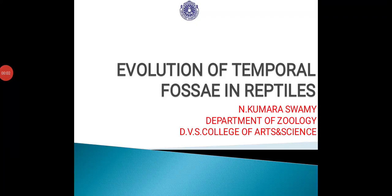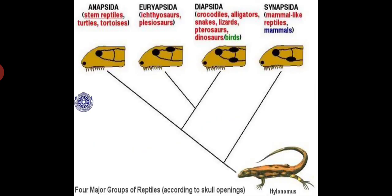Good morning students. Today let me explain a concept called the evolution of temporal fossa in reptiles. Temporal fossa are cavities or arches present in the skull region of reptiles as well as in later vertebrate animals.